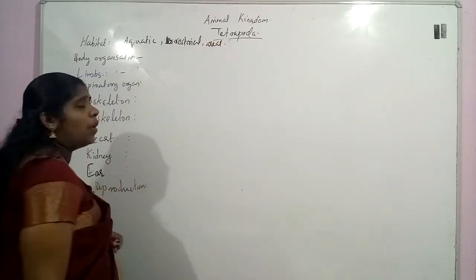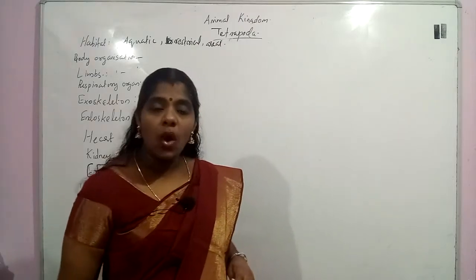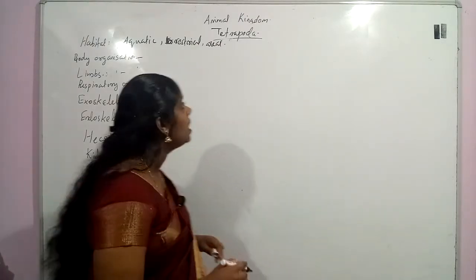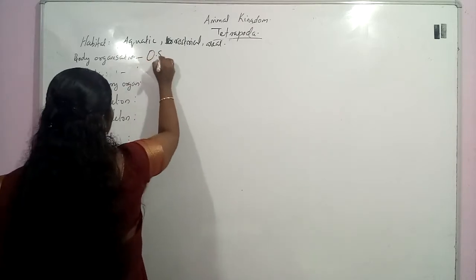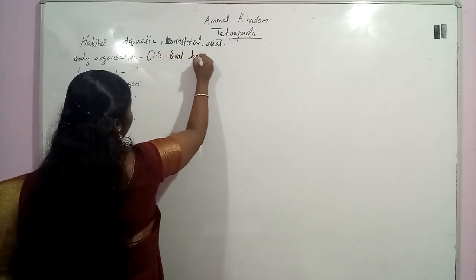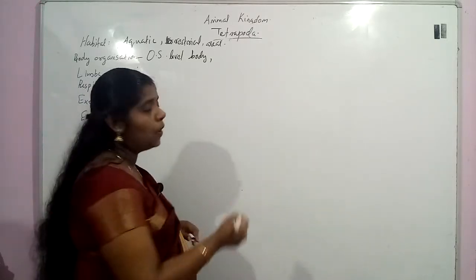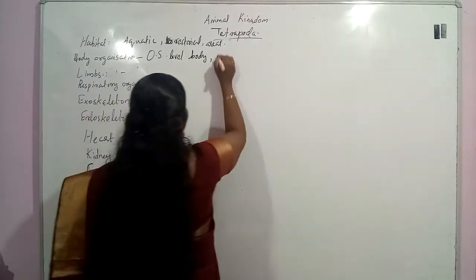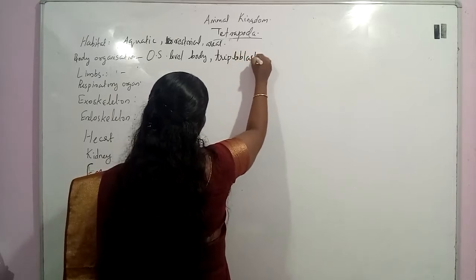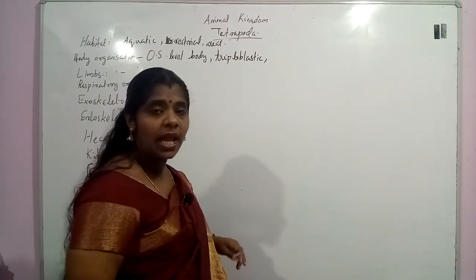We can see the body organization of this organism. They have a complex body at the organ system level of body organization. They are triploblastic.